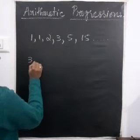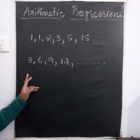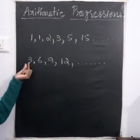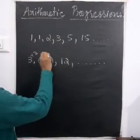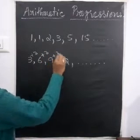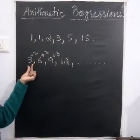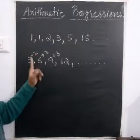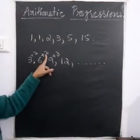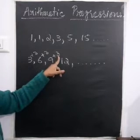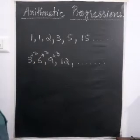So let us consider this: 3, 6, 9, 12, etc. Does this follow any definite pattern? Yes. We see that the first number is 3. The next number I got by adding 3, and the next by adding 3, and so on. So there is a common difference between two successive numbers. 6 minus 3 gives 3, 9 minus 6 gives 3, 12 minus 9 gives 3. We find the second term minus the first term gives the common difference.